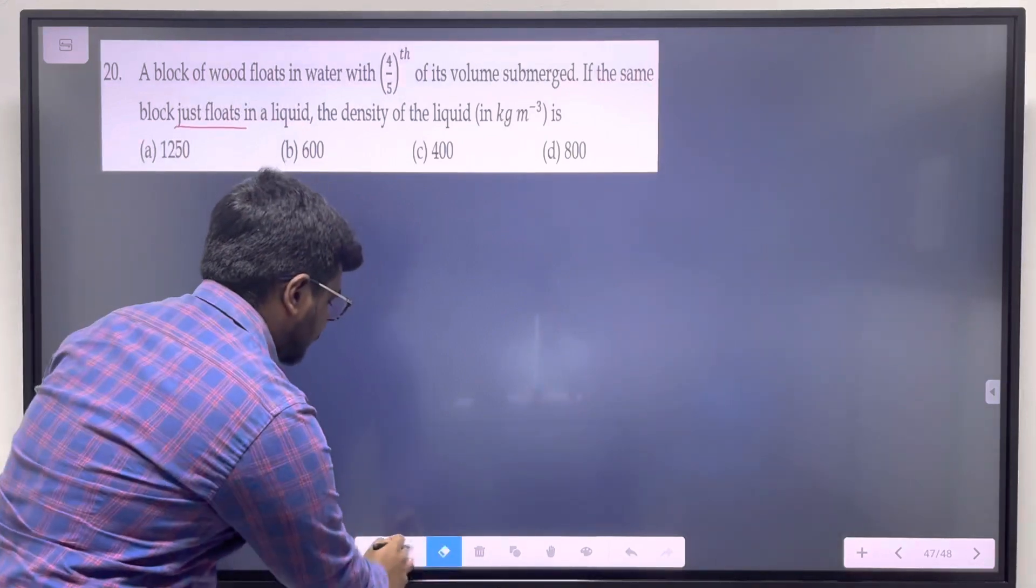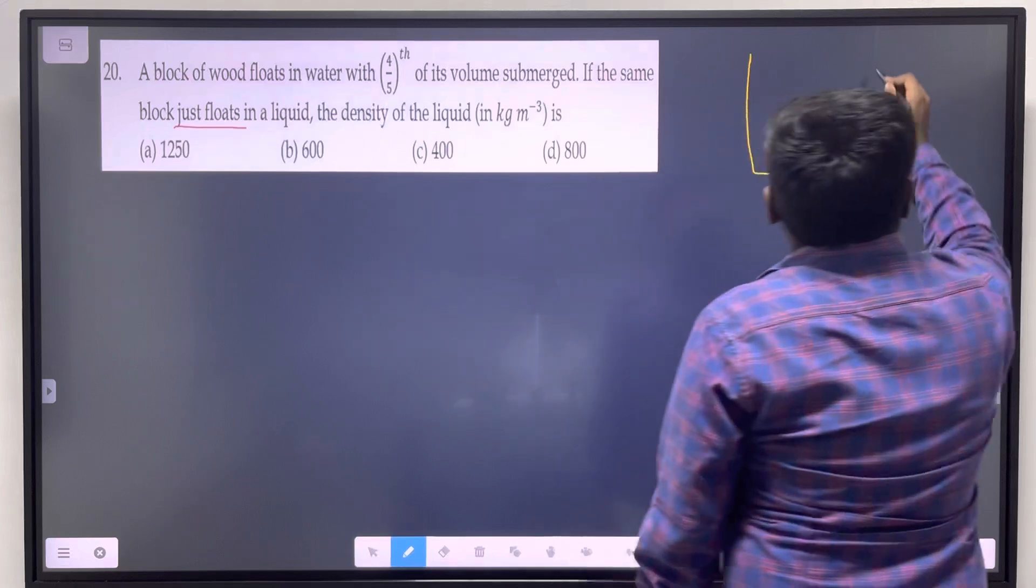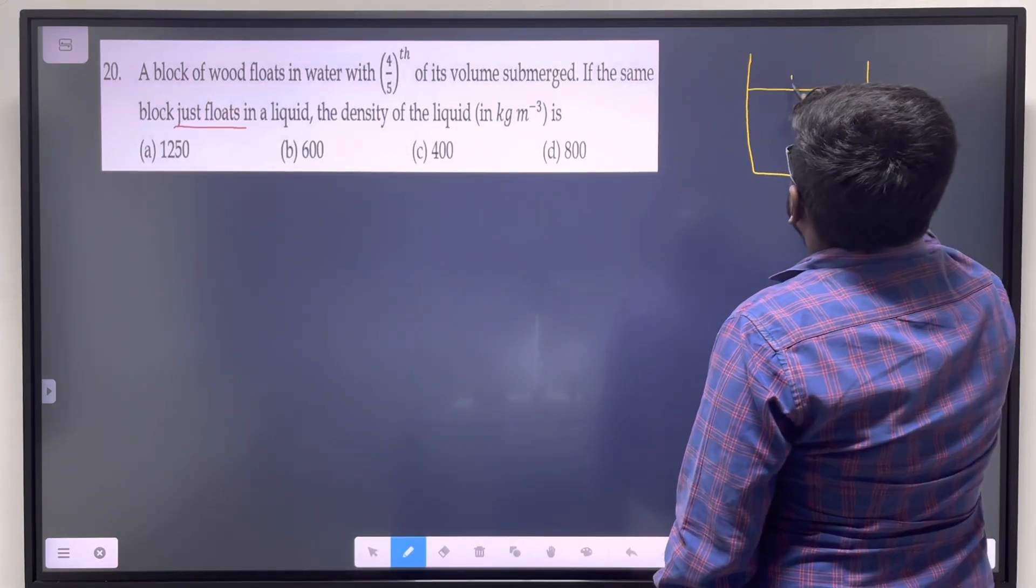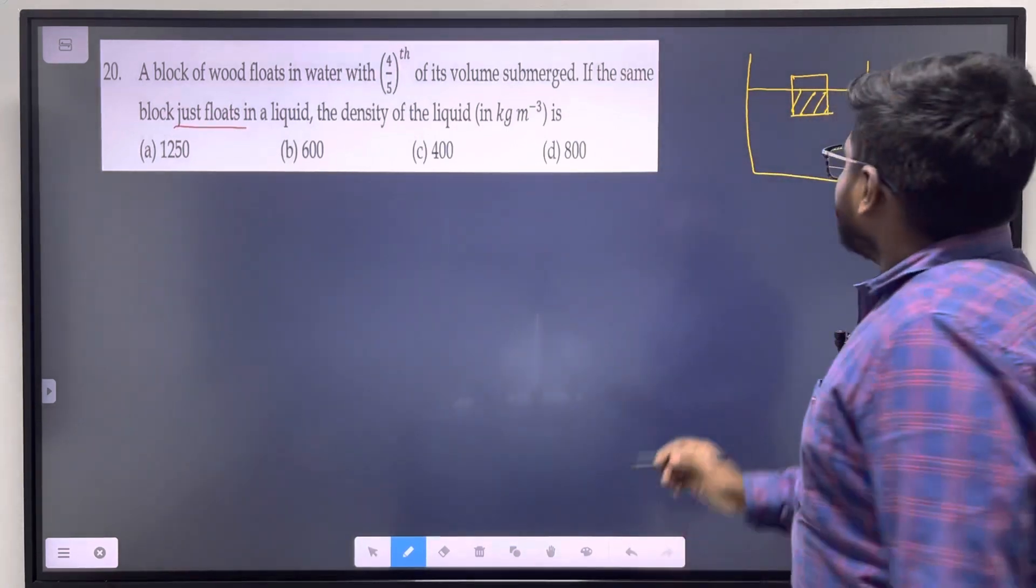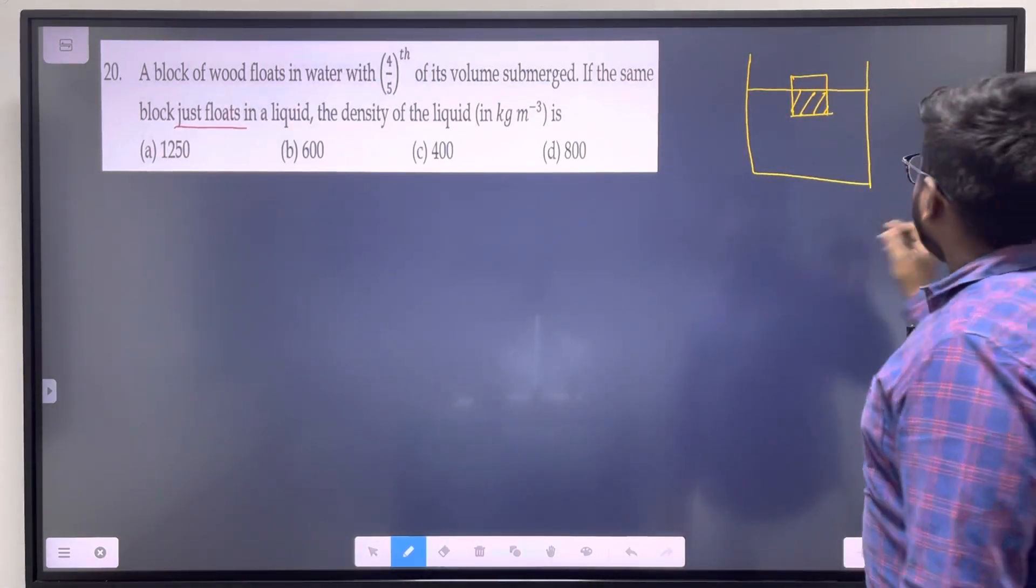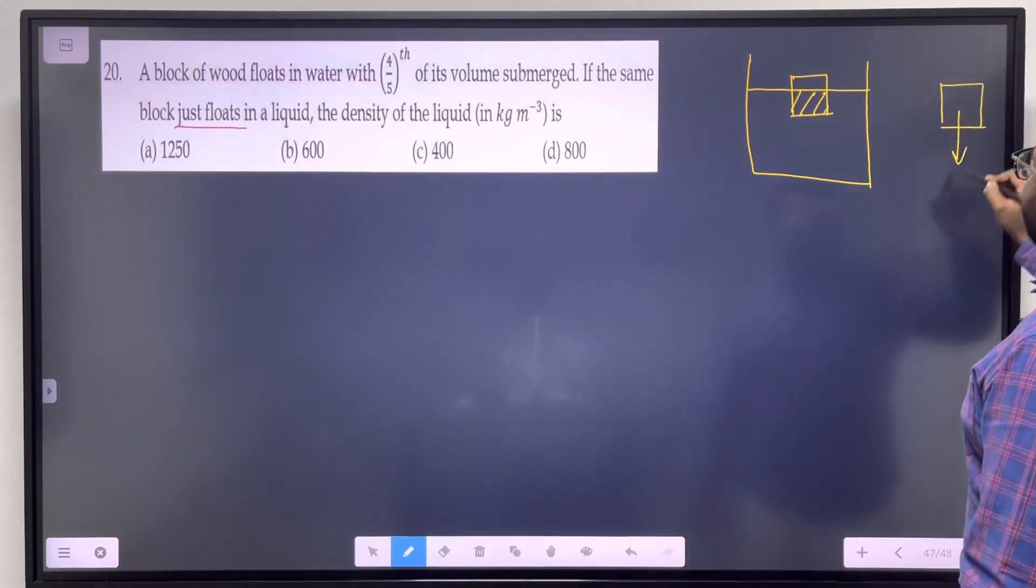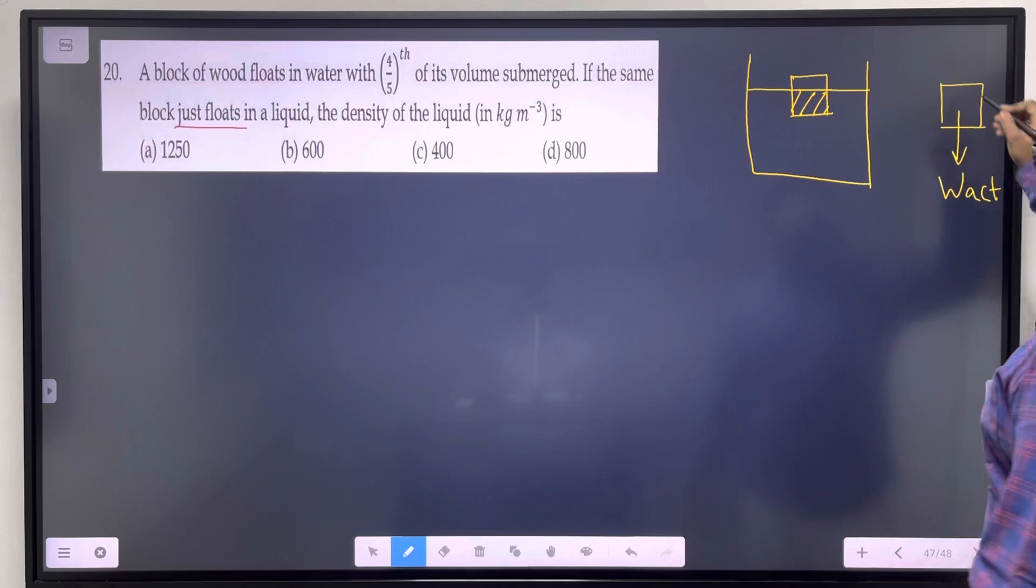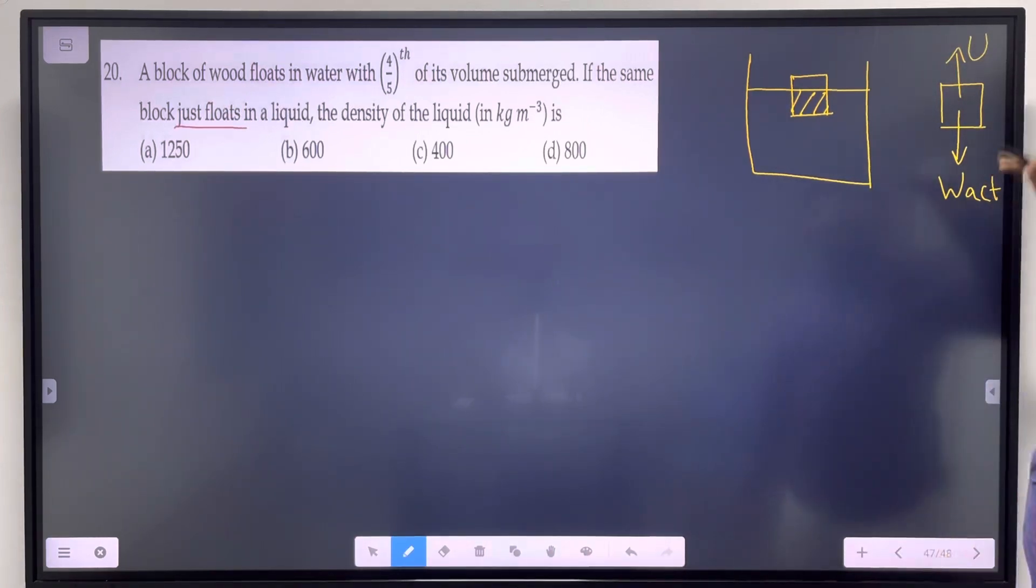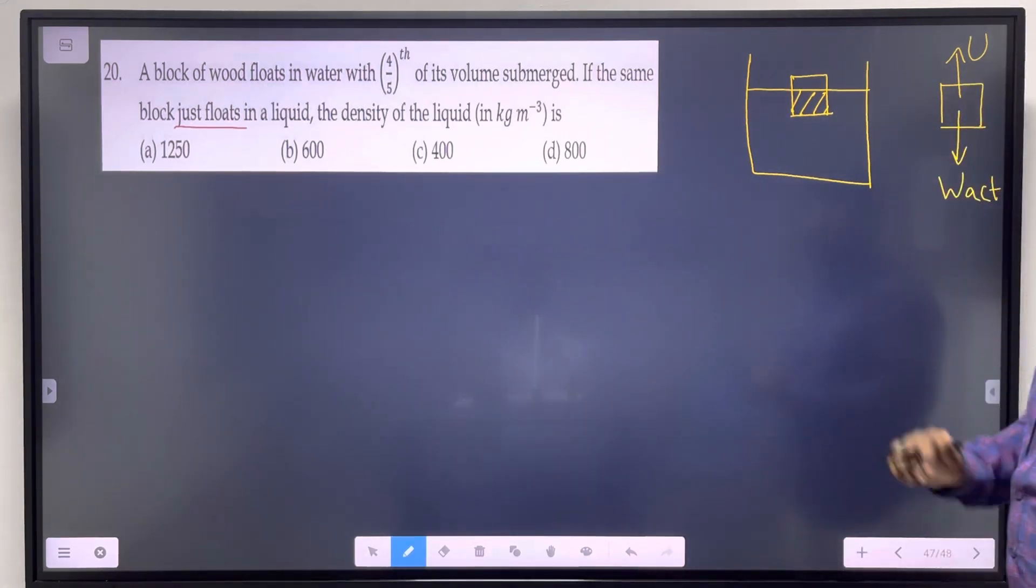Consider a container with a solid partially immersed in a liquid. The solid has its actual weight acting downwards and an upthrust acting upwards. This results in the apparent weight of the solid, according to Archimedes' principle.